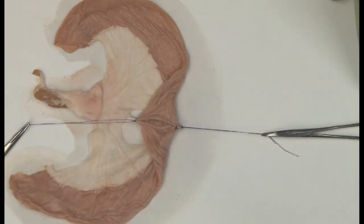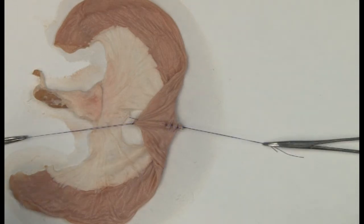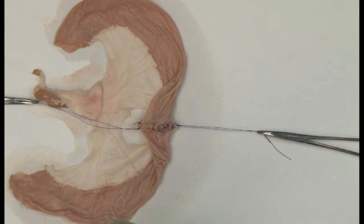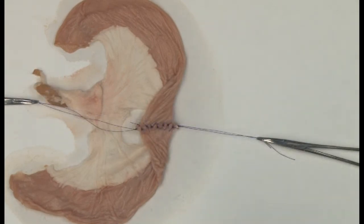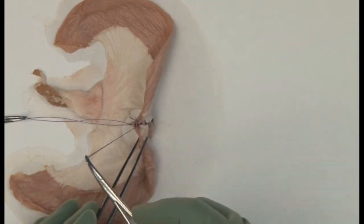Once again, insert sutures 5 mm apart using well-laid reef knots and hand ties. Make sure that the angles of the anastomosis, the so-called 6 and 12 o'clock positions, are adequately sutured since these are the most likely areas to leak.